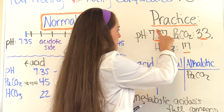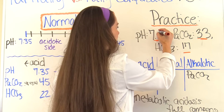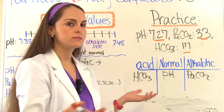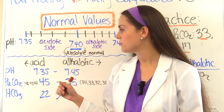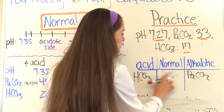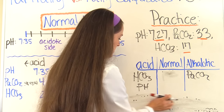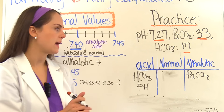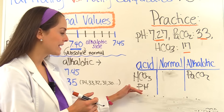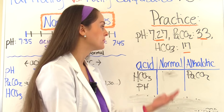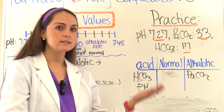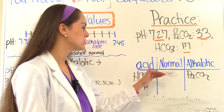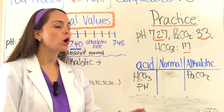Now let's say the blood pH changes to 7.27 instead of 7.37. It's now less than 7.35, so it's acidotic — not normal anymore. Does this change things? Yes — we no longer have full compensation; we have partial compensation. We now get a tic-tac-toe with three values on the acidotic side. The PaCO2 has moved out of normal range to make things more alkalotic, but it hasn't corrected the blood pH to normal yet. This is metabolic acidosis, partially compensated.